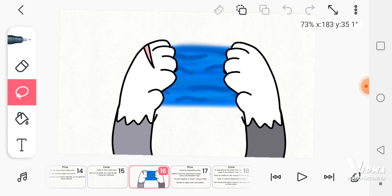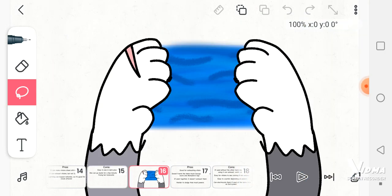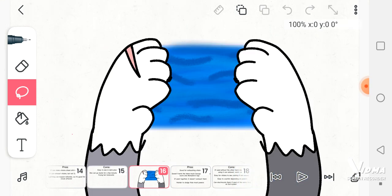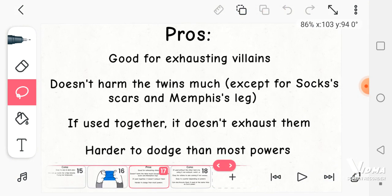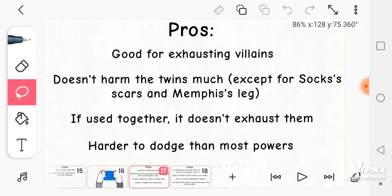Now for Sox and Memphis. If you can't tell which paw belongs to Sox and which one belongs to Memphis, the scar on this paw shows that it belongs to Sox, mostly just because it has slightly lighter fur color. First of all, the pros. It's good for exhausting villains. And two, it doesn't harm the twins much, except for Sox's scars and Memphis's leg.